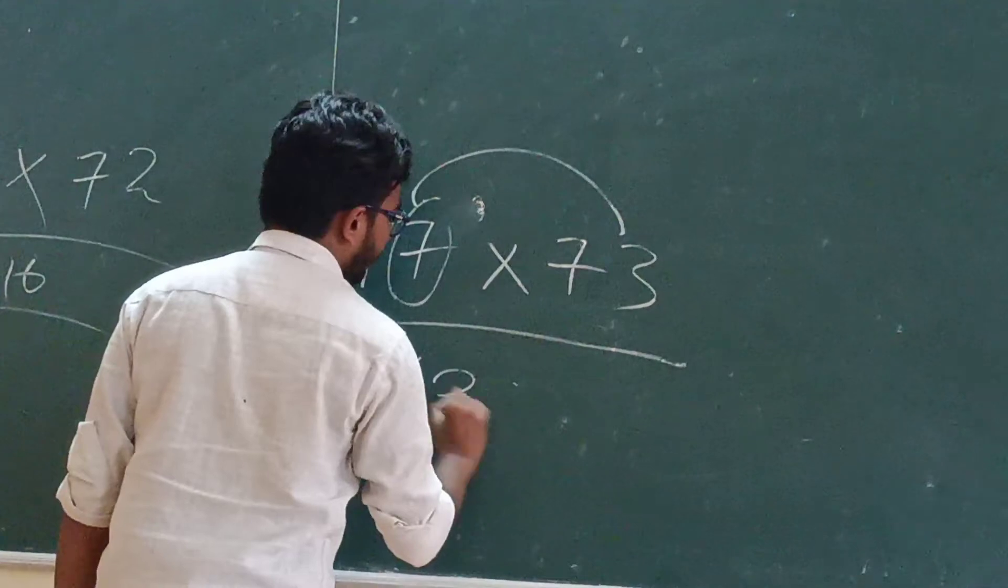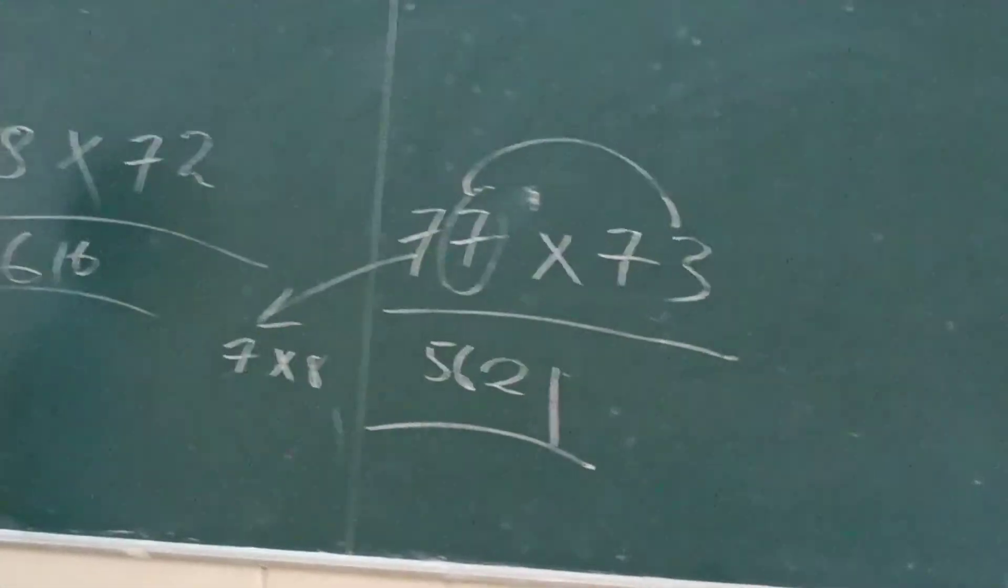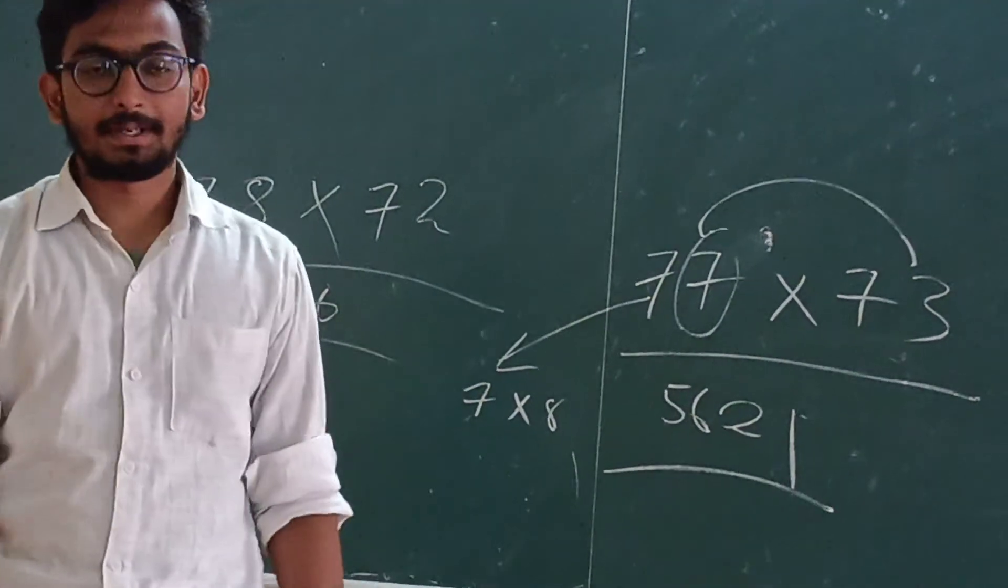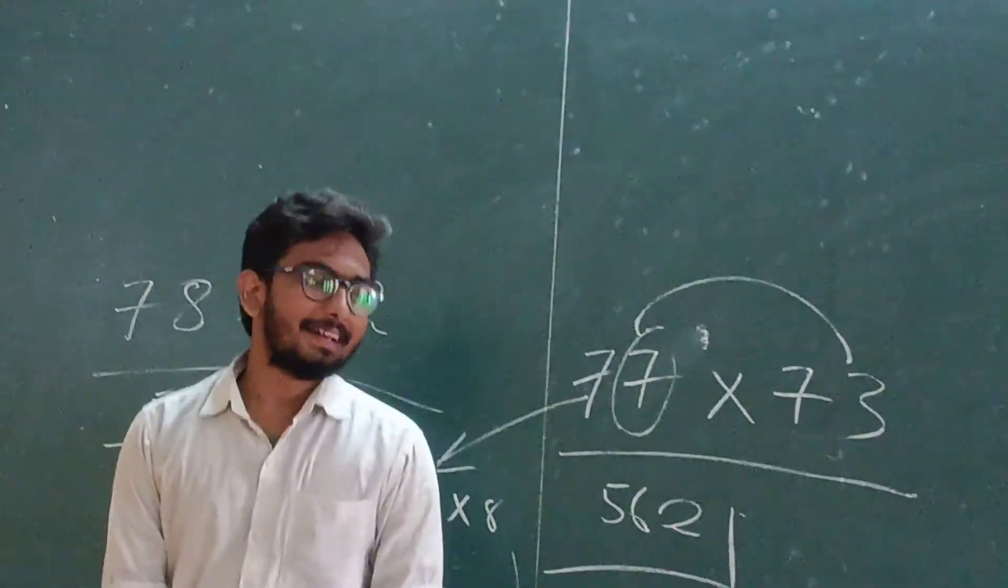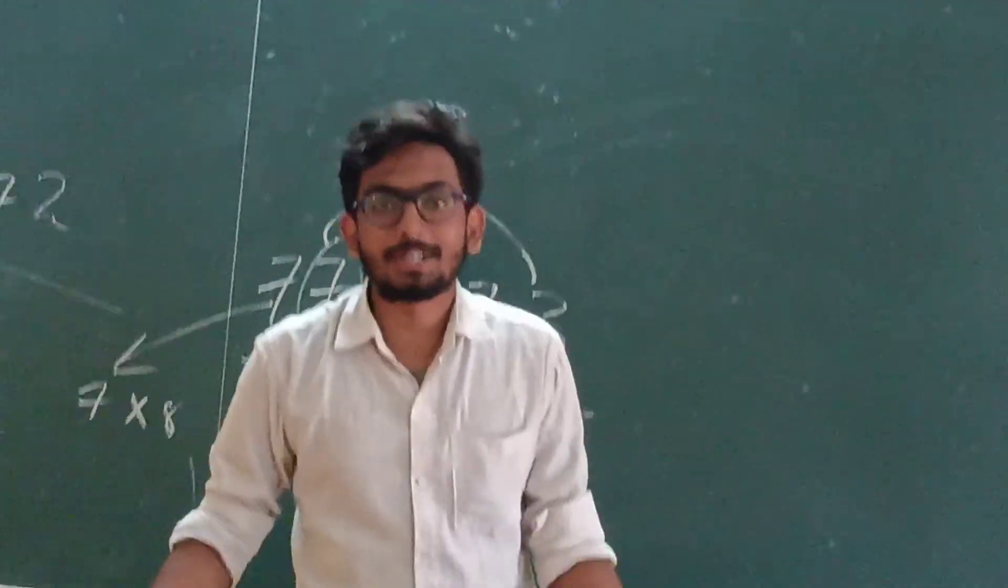And seven times three is twenty-one. Now, I think you may understand this. For more tricks, you have to ask your answer.